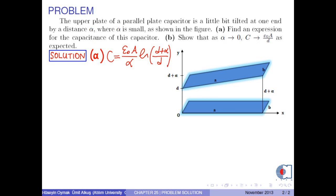Part b: show that as alpha goes to 0, C goes to epsilon zero times A over d as expected. Now, we can write d plus alpha over d as 1 plus alpha over d.